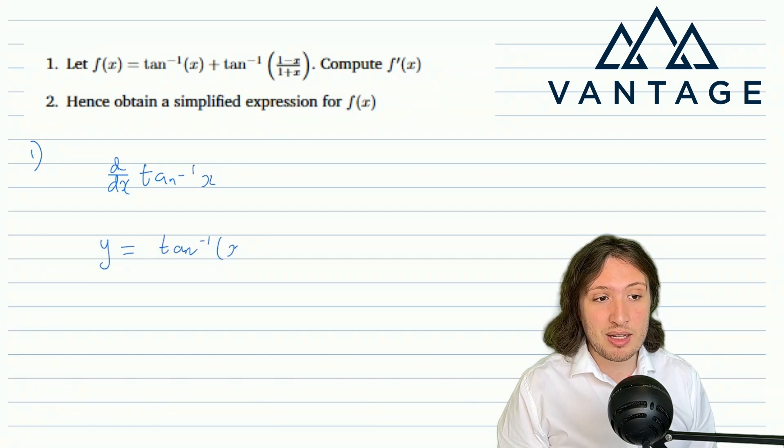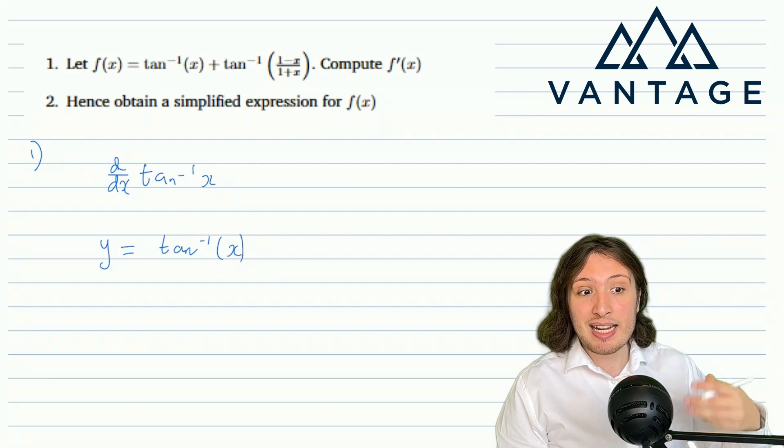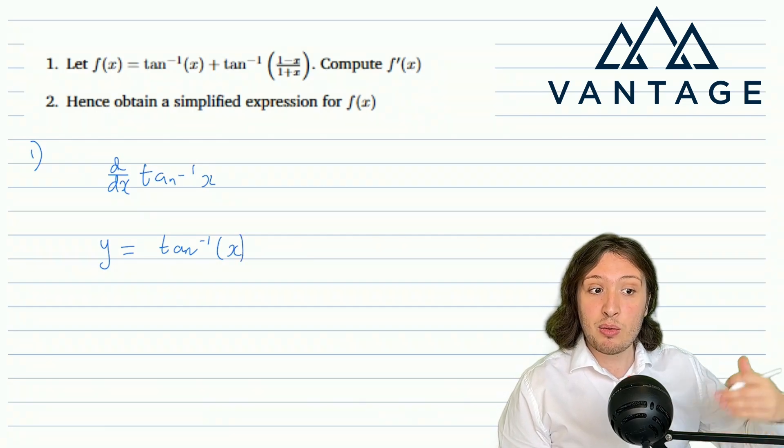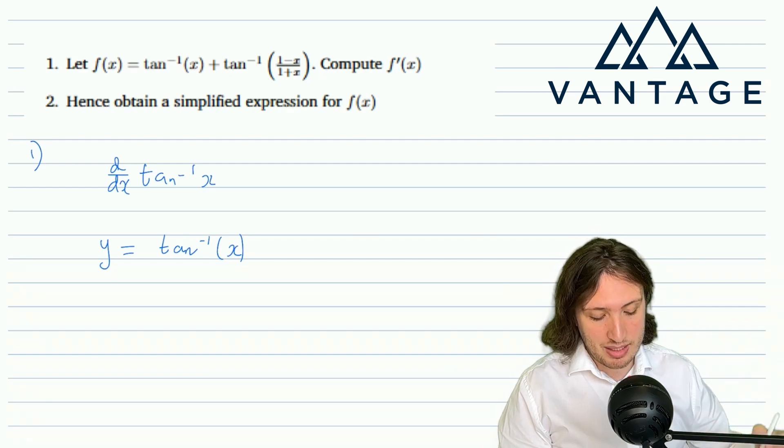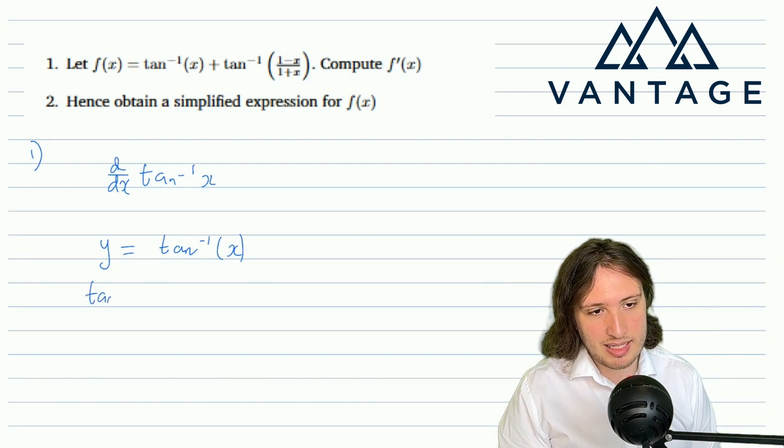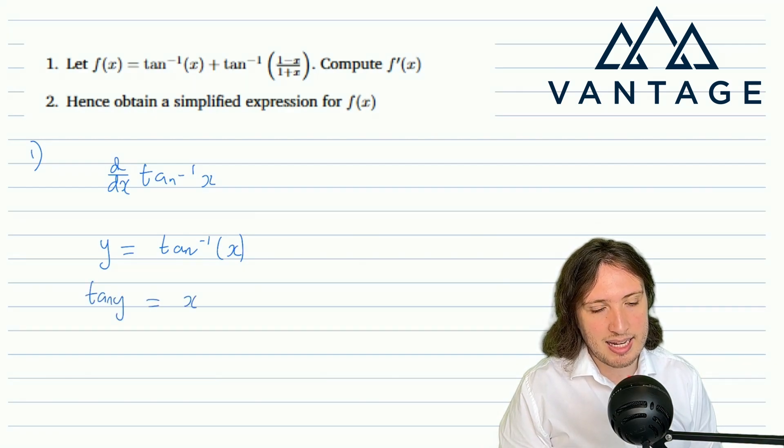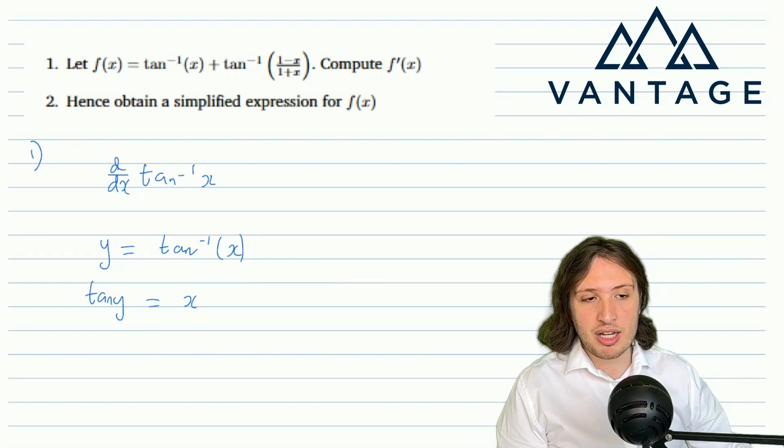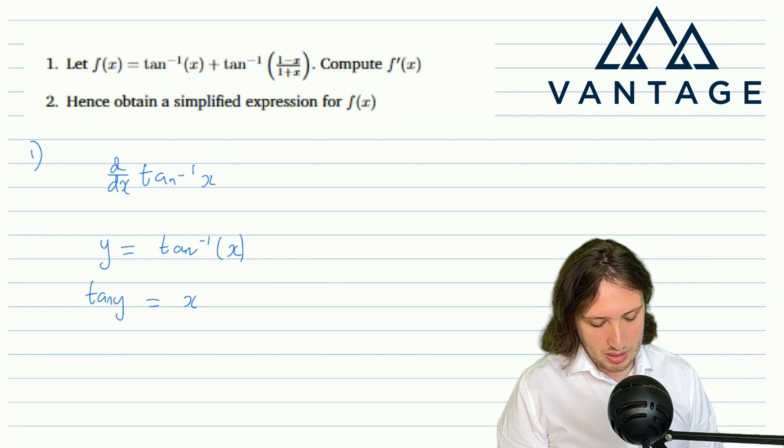So the easiest way to differentiate an inverse trigonometric function is to use implicit differentiation. In other words, we don't know how to deal with the inverse tan, but if I take tan of both sides of the equation y equals arctan(x), I can get rid of the inverse tan. So I see that tan(y) is x.